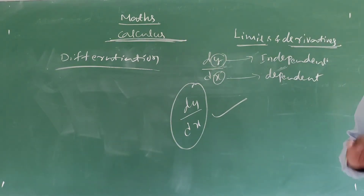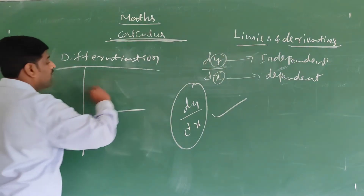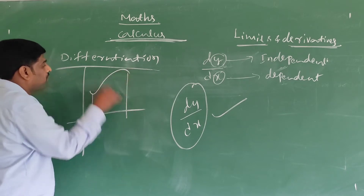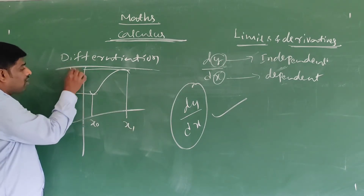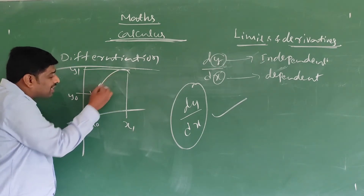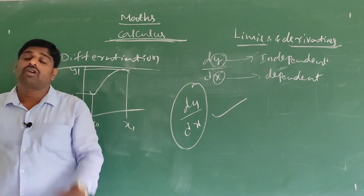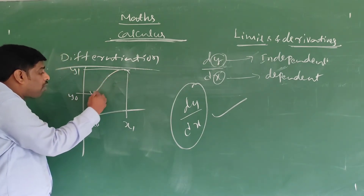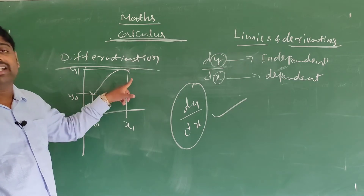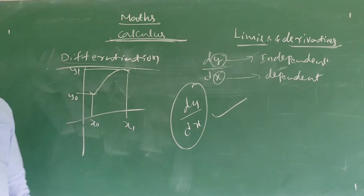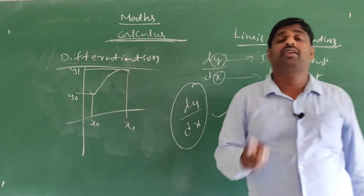For example, observe here in the draft. This is the curve. This is x naught, this is x1, this is y naught, this is y1. The curve is bending here — how much it is bending is called the slope, the slope of the tangent. Finding the slope of the tangent of the curve is called differentiation. This is the technical definition for differentiation.